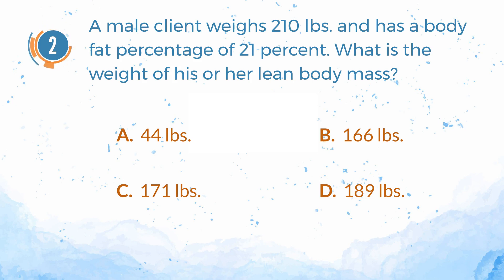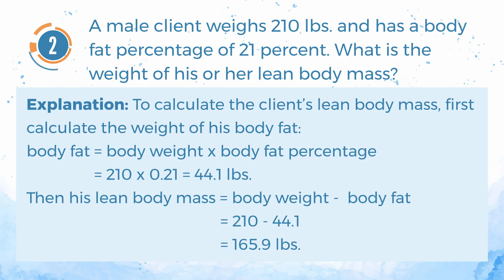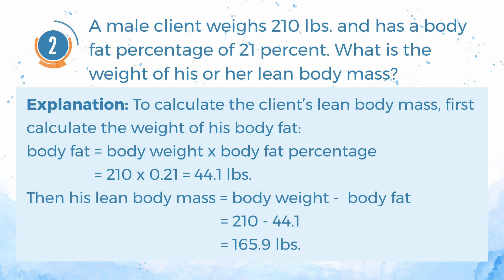The correct answer is B: 166 lb. To calculate the client's lean body mass, first calculate the weight of his body fat by multiplying his body weight by his current body fat percentage: 210 multiplied by 0.21 equals 44.1 lb. Then his lean body mass equals 210 minus 44.1, or 165.9 lb.